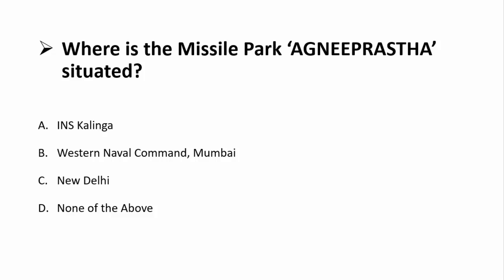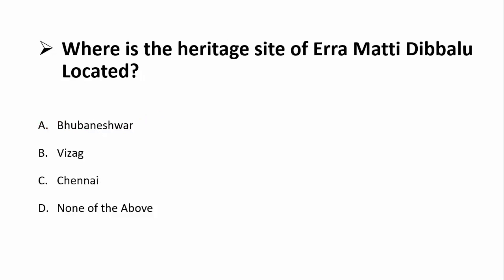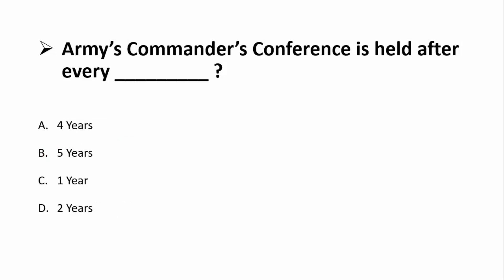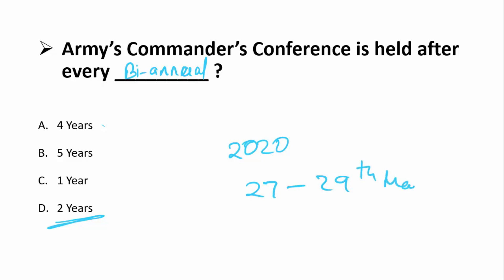Now it's quiz time. Question 1: Where is the missile park Agni Prastha situated? The correct answer is INS Kalinga. Question 2: Where is the heritage site Yeramatti Dibalu located? It is in the district of Visakhapatnam in Andhra Pradesh — correct answer is Option B. Question 3: The Army Commanders Conference is held after every how many years? It is a biannual event, held every two years. The first phase for 2020 was held from 27th to 29th May, and the second phase is expected in June.